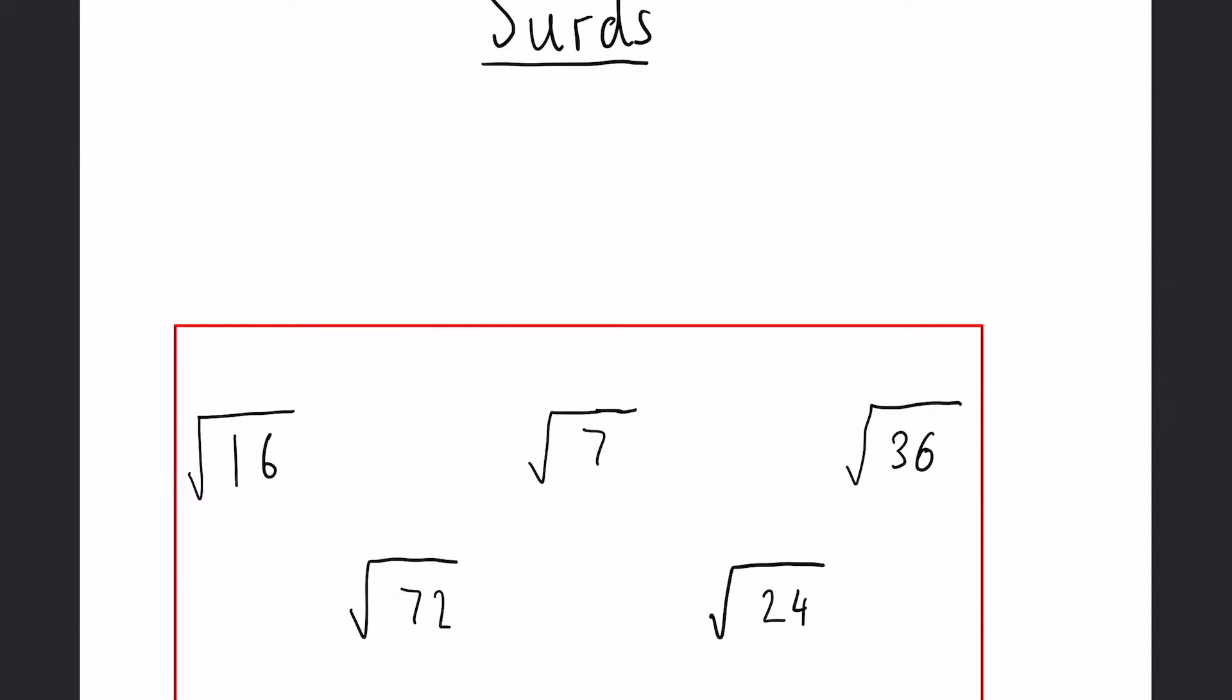Hopefully you've managed to have a go and we can see that the 7, 24, and 72 aren't square numbers and so can't be rooted. These are our three surds. We can see that the square root of 16 would equal 4 and the square root of 36 is going to equal 6.